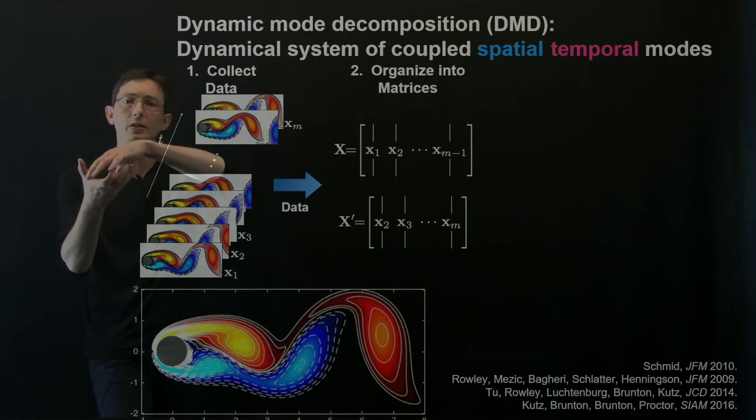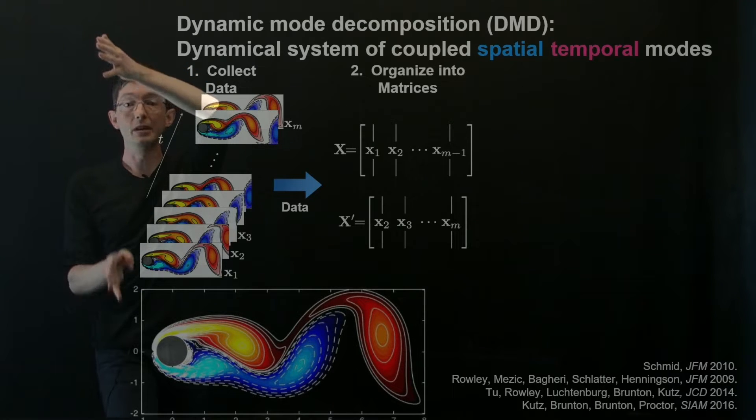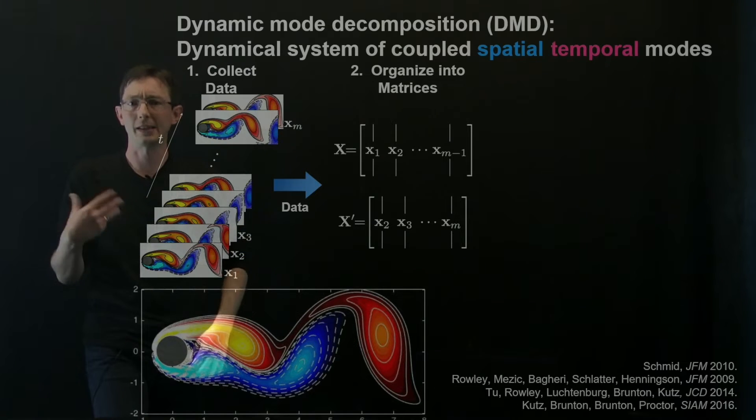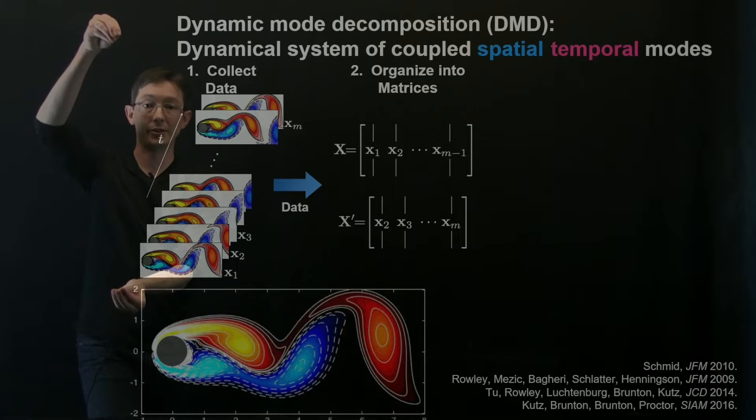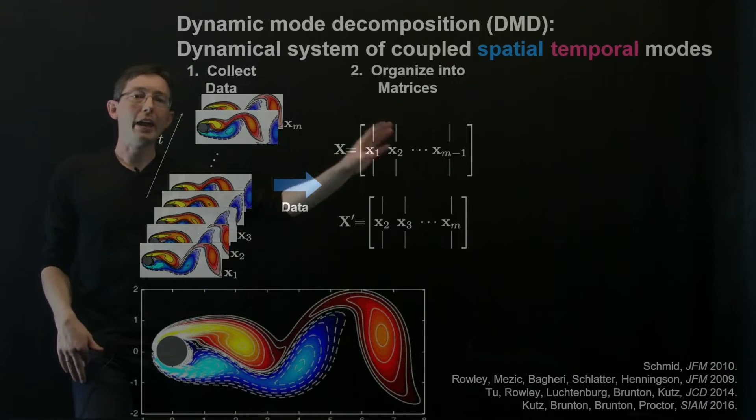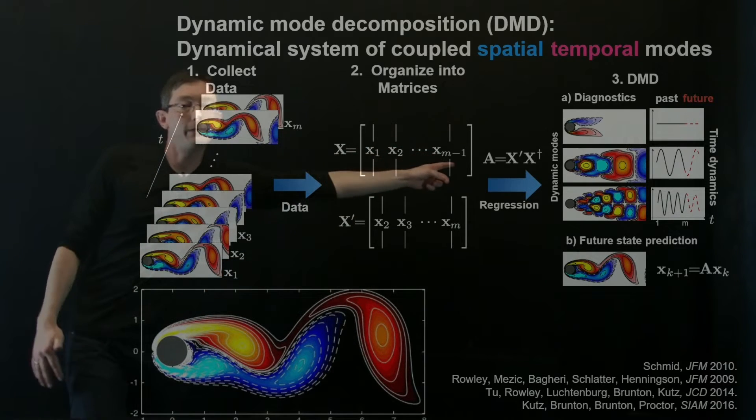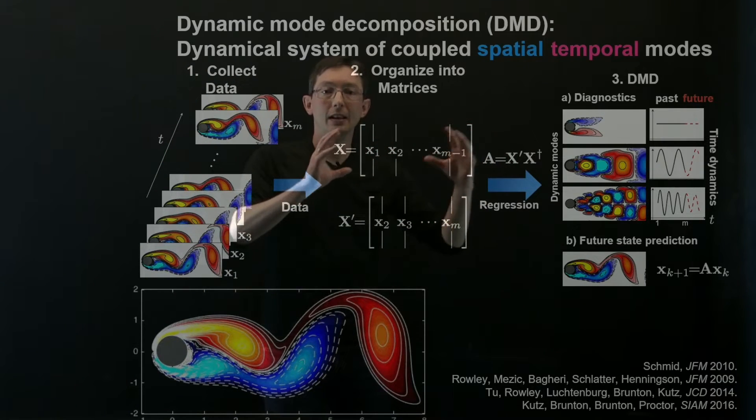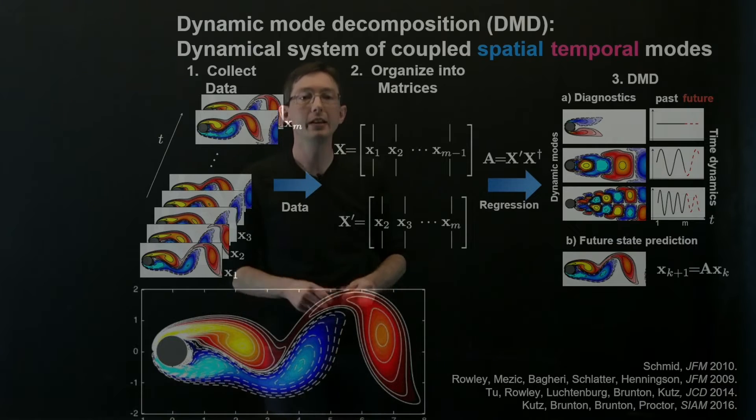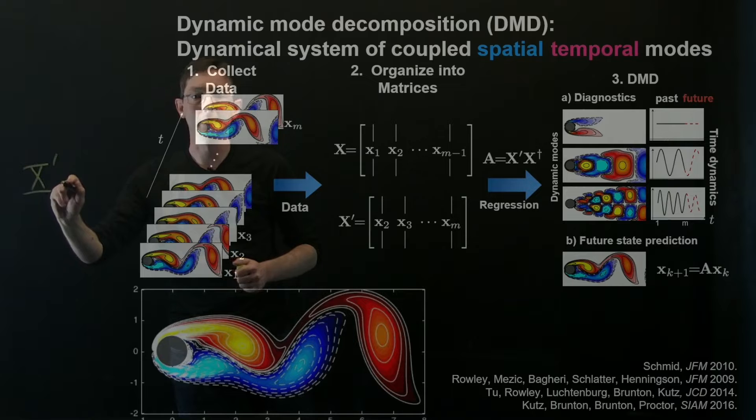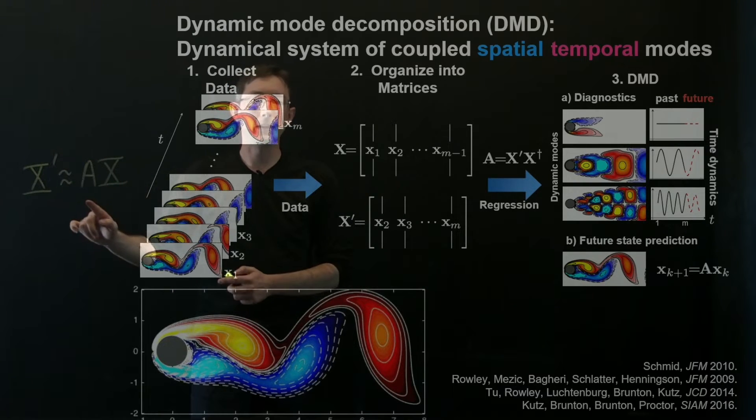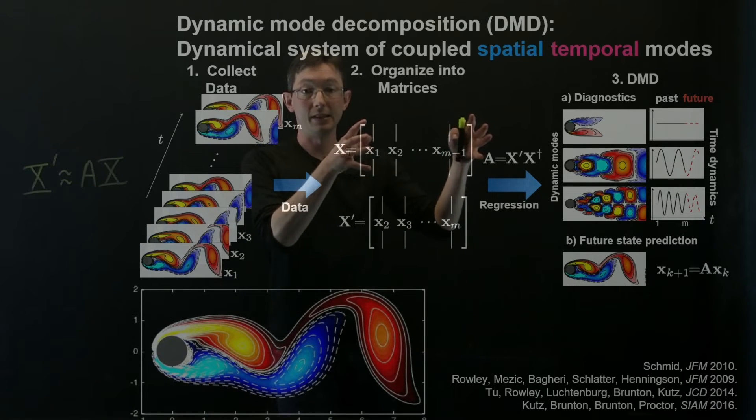And for fluids data, these matrices are usually very tall and skinny. So maybe I have hundreds of thousands or even millions or billions of measurements per time snapshot, but maybe I only have a few hundred or a thousand snapshots in time. Usually that's how these kind of fluid data evolve is that I have a ton of spatial measurements, maybe millions of spatial measurements, but I only have a few hundred snapshots in time. So these are super tall, skinny matrices. And then what the dynamic mode decomposition does is it essentially tries to find a best fit linear operator A that advances X into X prime. So the basic assumption here is that you can write down this dynamical system in terms of a linear dynamical system. So we're going to say X prime is approximately equal to some big A matrix times X.